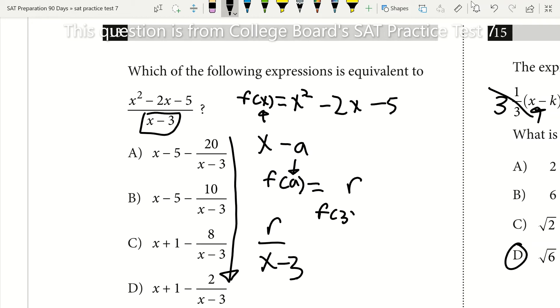I plug in I'm just doing f of 3 that's going to equal 3 squared minus 2 times 3 minus 5. 3 squared is 9. 9 minus 2 times 3 that's going to be minus 6 and then minus 5. 9 minus 6 leaves me with 3. 3 minus 5 leaves me with negative 2.